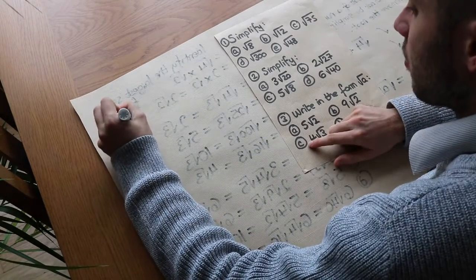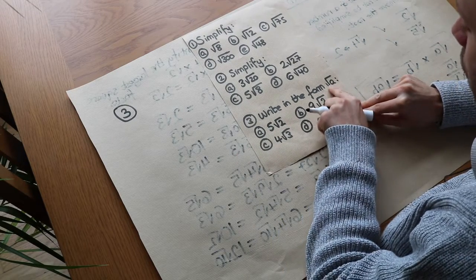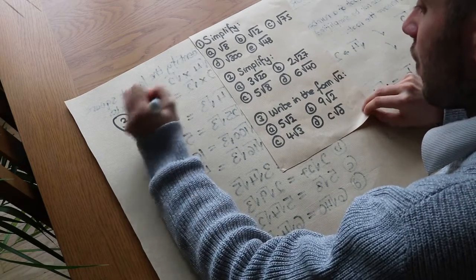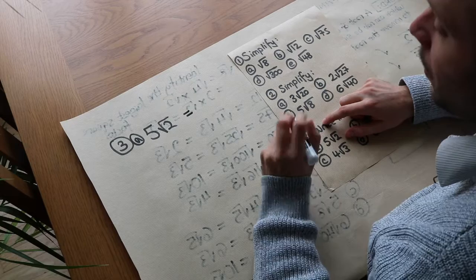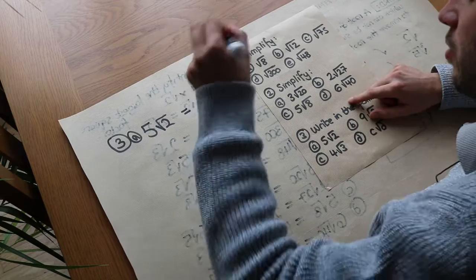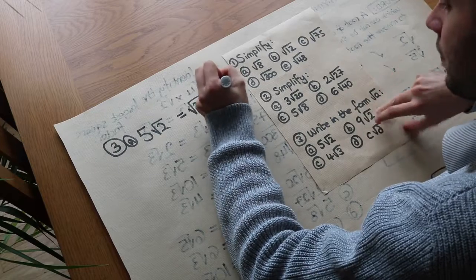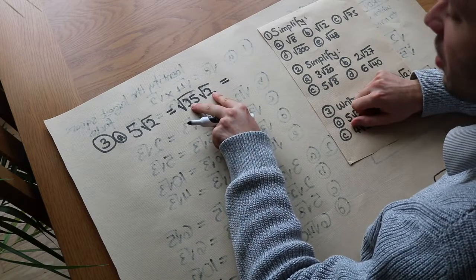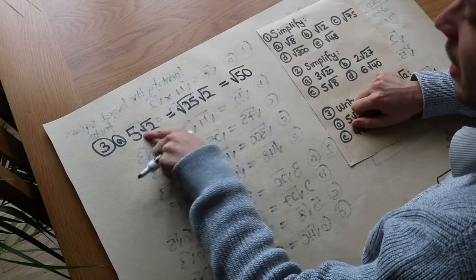Finally, you sometimes have to do the reverse — I've seen this more in IGCSE papers rather than GCSE papers — where we want to write the following in the form root a: a single square root with nothing in front of it. If we have 5 root 2, we work backwards: 5 is the square root of 25, so we write this as root 25 times root 2. From our laws of surds, we can multiply those together: 25 times 2 is 50, so it's the square root of 50.